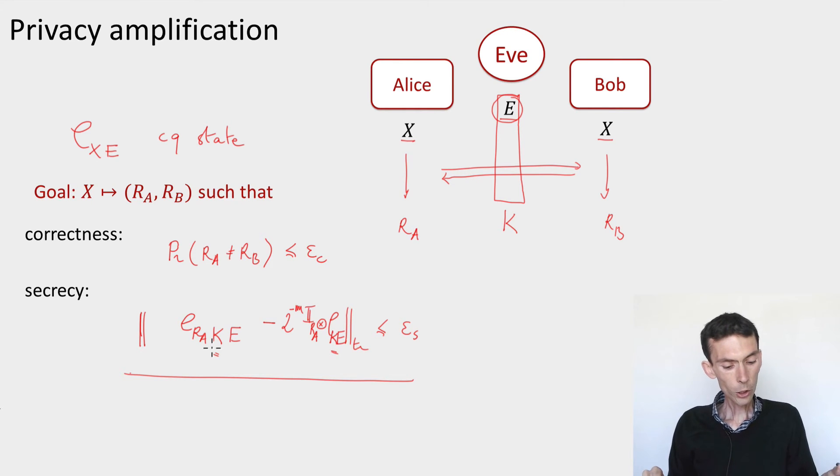The second thing is that we're not going to be able to achieve this if there's no assumption at all on the initial cq state. Because if, for instance, e contains a direct copy of x, then we won't be able to extract any uniform bits. So there's going to be an assumption, and the assumption is going to be that there is some uncertainty, as measured by the min entropy that you learned about last week, of x conditioned on e. And this will be some parameter k. So we'll assume that this min entropy is large enough, and then we should have a protocol that is εc correct and εs secret. In that case, we'll say that we've achieved privacy amplification for weak secrets that have entropy at least k.